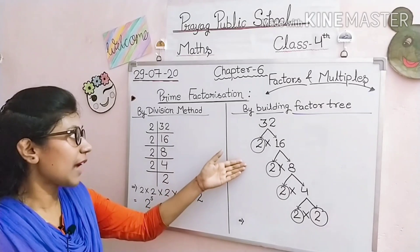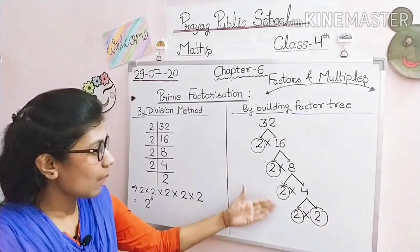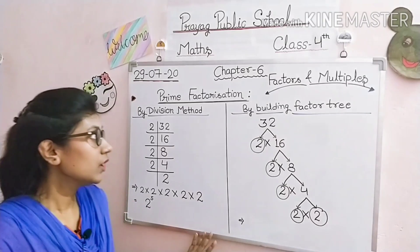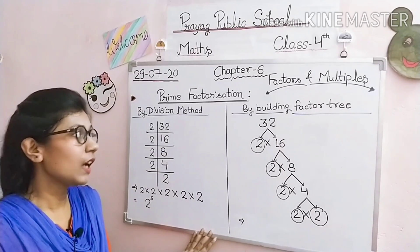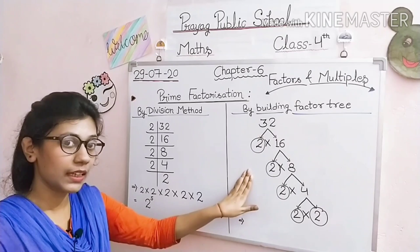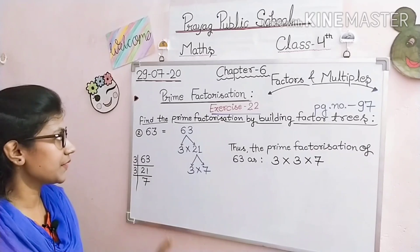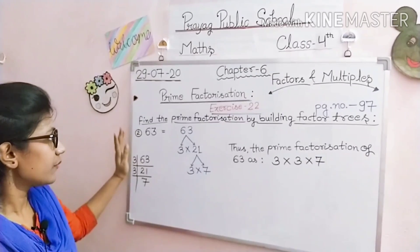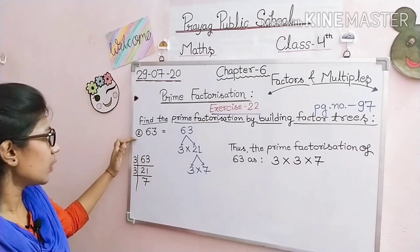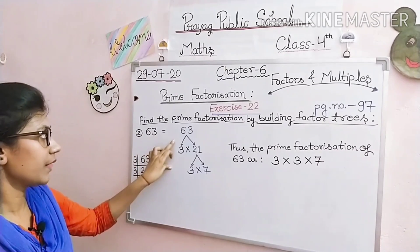इस process को हम factor tree बोलते हैं। जो prime numbers होते हैं हम उन्हें circle कर लेते हैं ताकि उनके product के form में easily लिख सकें। हम prime factorization by building factor tree method से solve करना देखेंगे। अब हम exercise number 22 from page number 97 के questions solve करते हैं। Question: Find the prime factorization by building factor trees. हम question number 2 लेते हैं — 63 के prime factorization find out करने हैं by building factor tree।